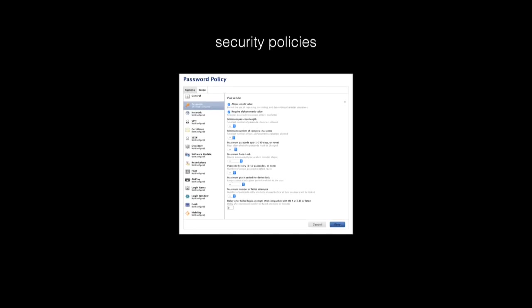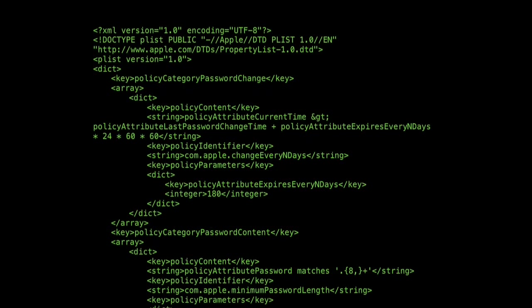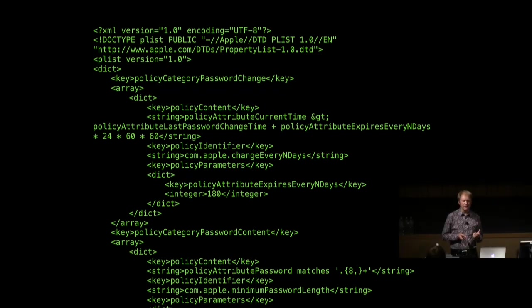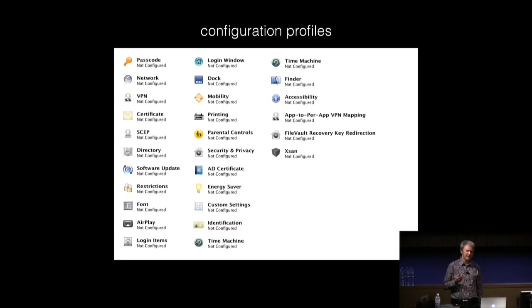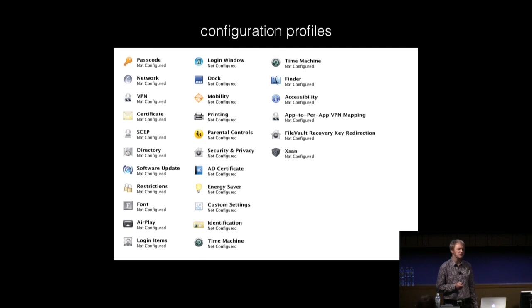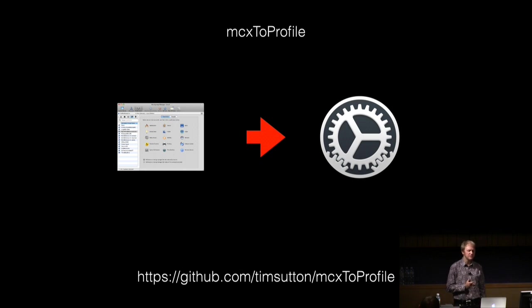What else can we do to provide AD-like features without binding? Security policies for AD users — especially passwords — can be applied to local users with a configuration profile, providing a lot of versatility around password complexity. This can also be done with a plist file, and is especially useful if you want to exclude certain accounts like tech admins from a password rotation policy. The volume of items manageable with configuration profiles is growing with every OS release. Tim Sutton's MCXToProfile tool can convert MCX records into configuration profiles. The Mac admins community has created many awesome tools and are happy to share them.